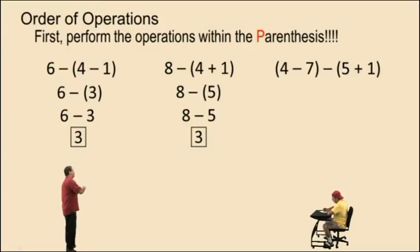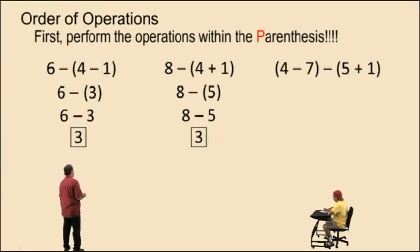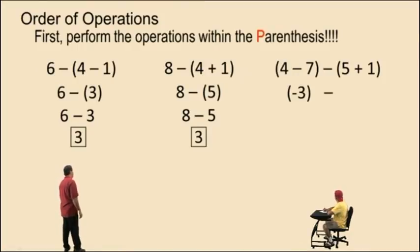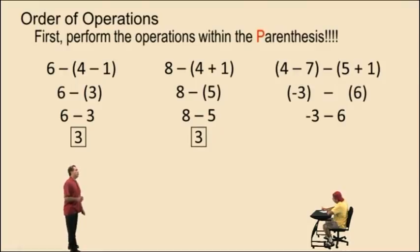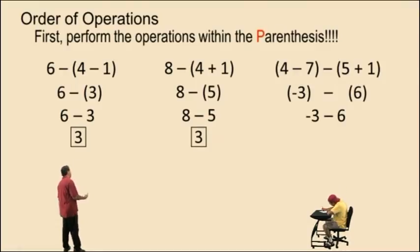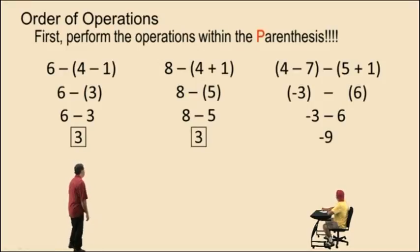Now notice we have two sets of parentheses. So we have to simplify the expressions within the parentheses. 4 subtract 7 is negative 3. 5 plus 1 is 6. We don't require those parentheses around that negative 3, and because we're subtracting a positive 6, we do not require the parentheses around that 6 either. So it turns into negative 3 subtract 6, which is negative 9.